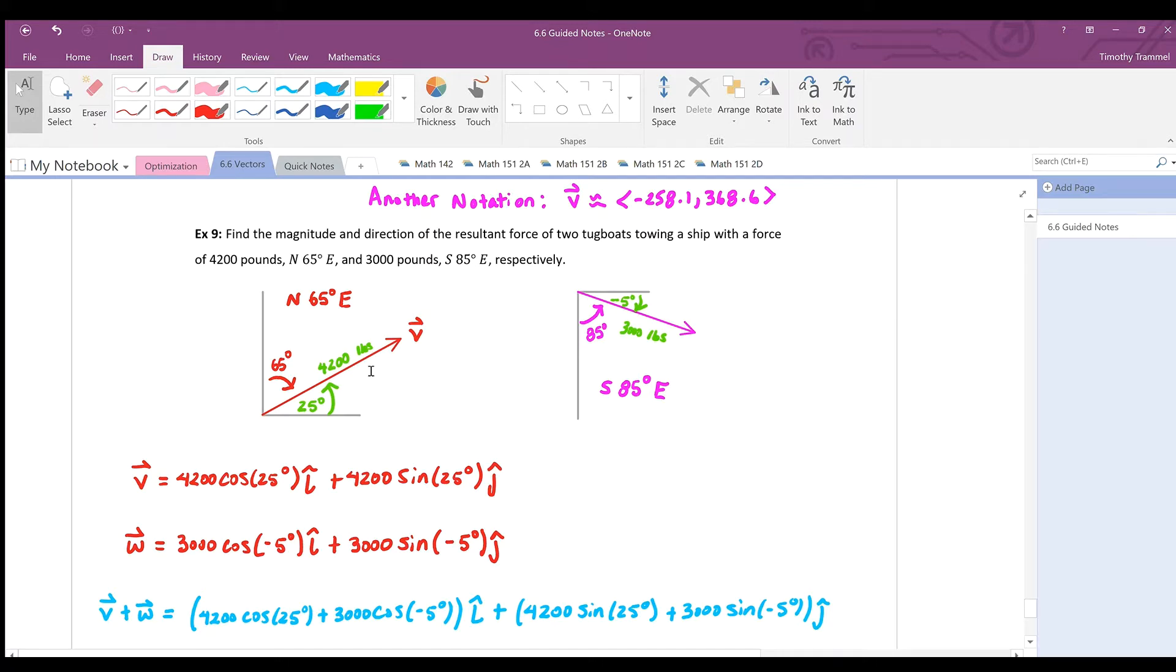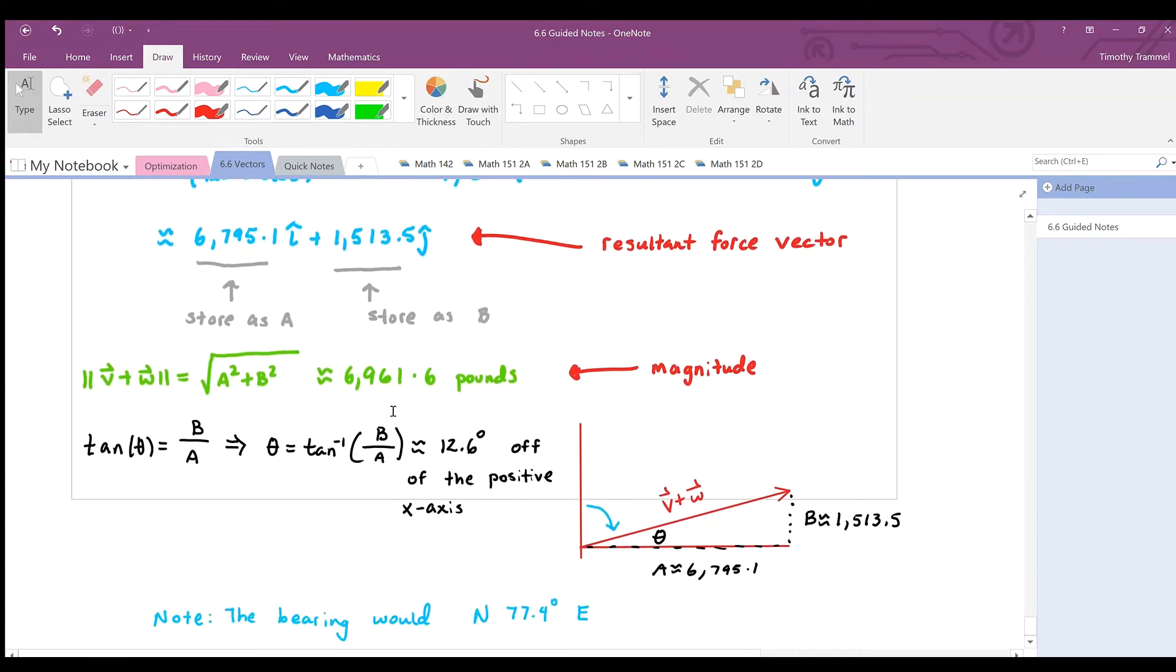And the idea is that when we combine both of their forces, the result is that we end up with a force of 6,961.6 pounds in the direction of 12.6 degrees off the positive x-axis, or if you want to describe that in terms of bearing, you can as well.